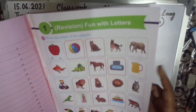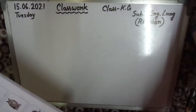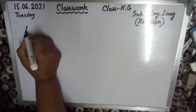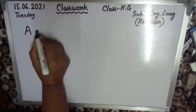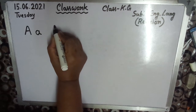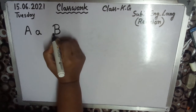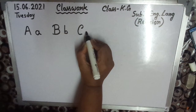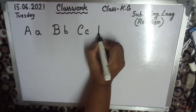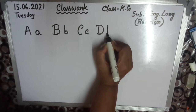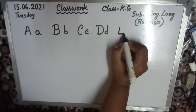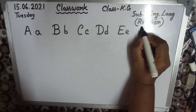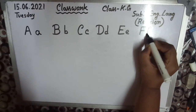Okay children, first chapter — capital and small practice. Capital A, small a. Capital B, small b. Capital C, small c. Capital D, small d. Capital E, small e. Capital F, small f.